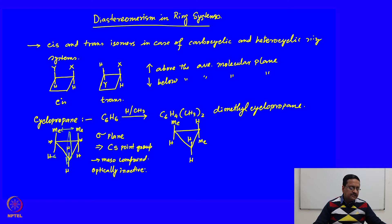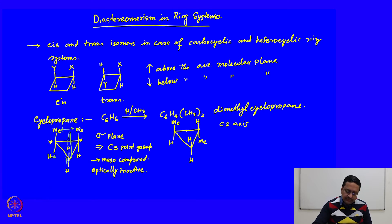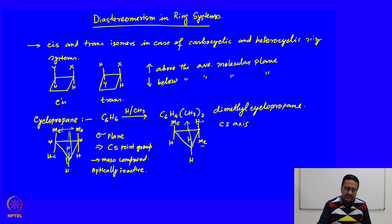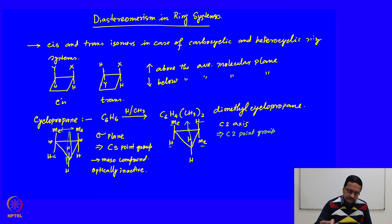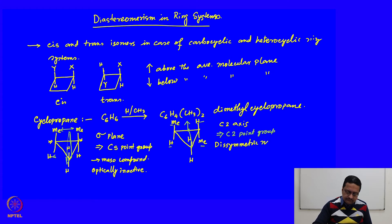The trans compound has a C2 axis passing through the midpoint of the C-C bond and through that carbon atom. If we rotate the molecule about that C2 axis, the upper methyl comes to the lower position and the upper hydrogen comes to the lower position. This molecule belongs to the C2 point group and is a disymmetric molecule, hence optically active.